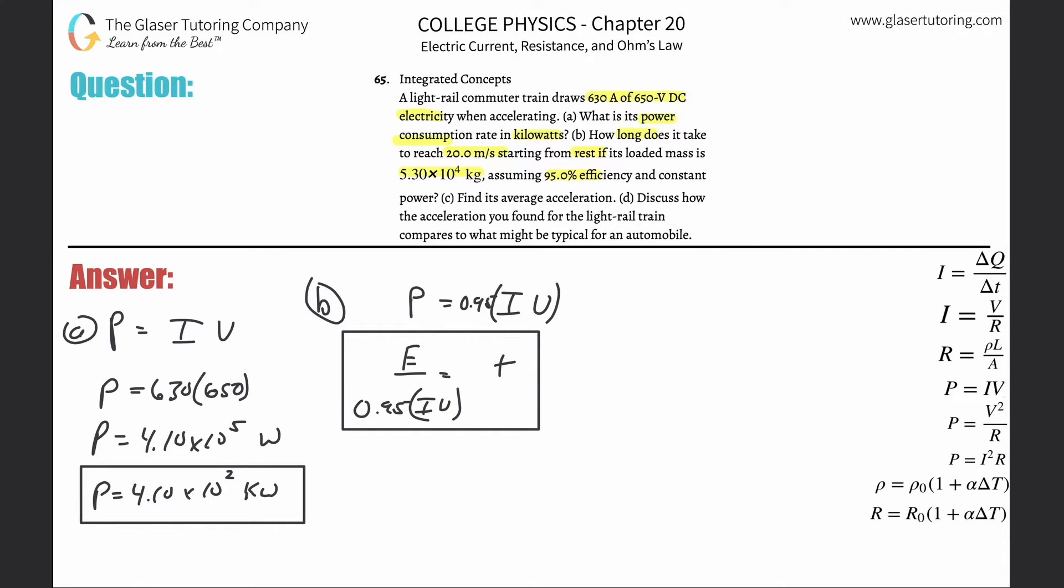Consider we know velocities: the initial velocity is going to be equal to 0, the final velocity is going to be equal to 20 meters per second, and the mass is 5.3 times 10 to the 4 kilograms. You got to think how are these variables related to energy? Well, probably through kinetic energy, right? Energy of motion.